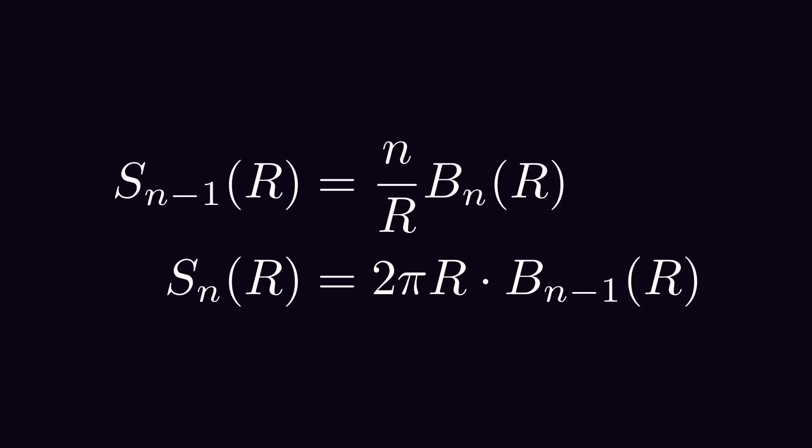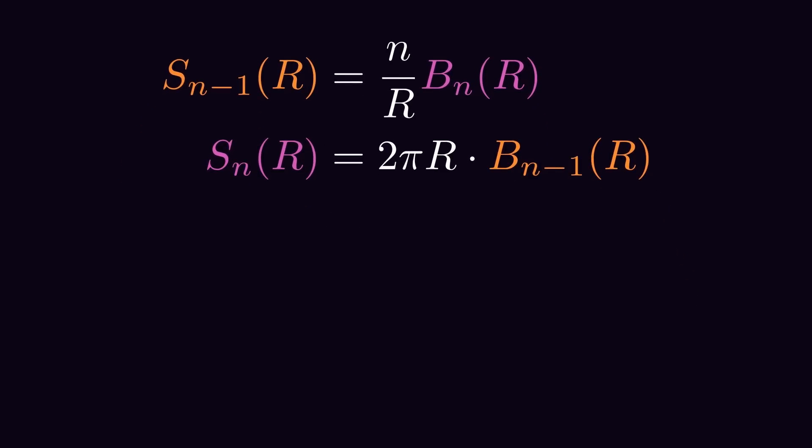It's finally coming together now. We got two formulas: one relating Sn-1 with Bn and one relating Sn with Bn-1. To get a complete recursion formula, we need to specify these values for two values of n. These will be our starting points. Let's choose the area of the circle, B2, which is π times r squared. And the length of a line from minus r to r, B1, is 2 times r.